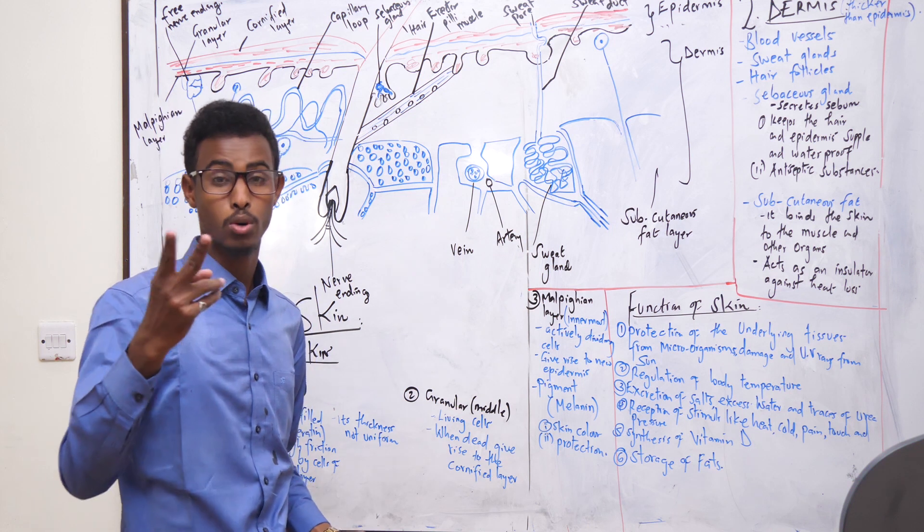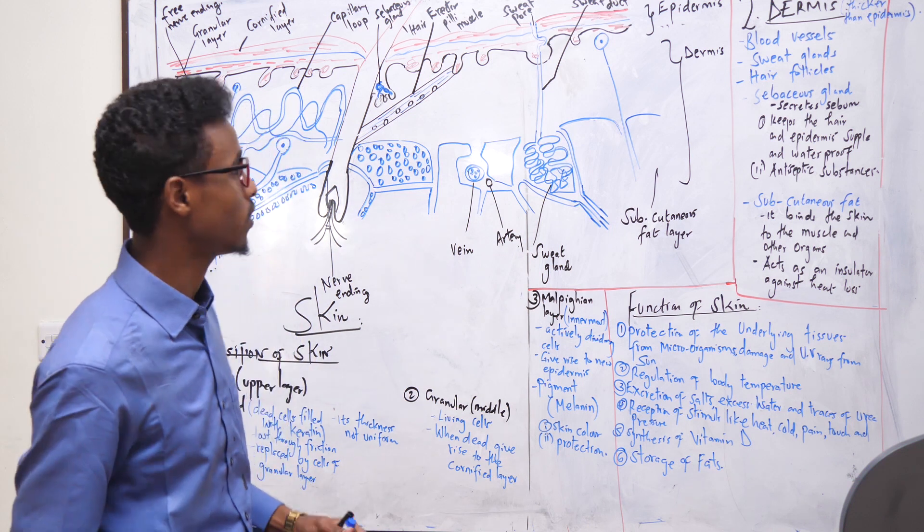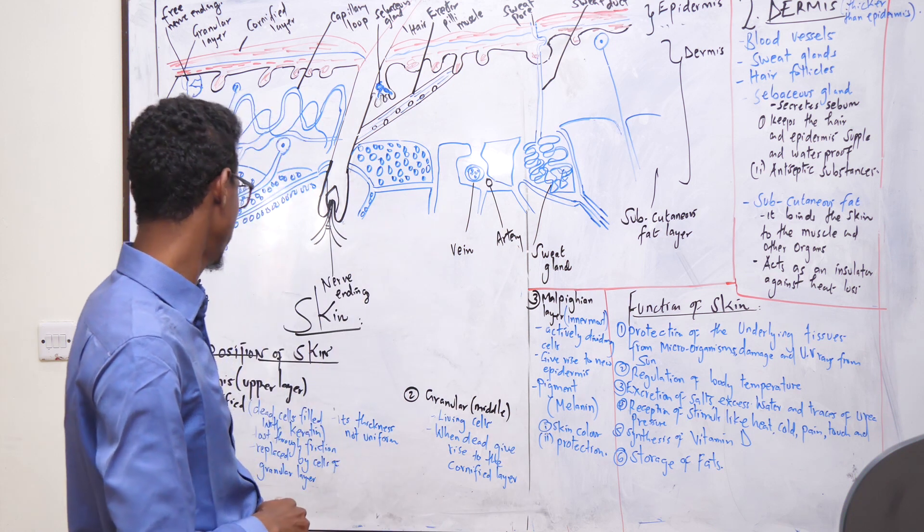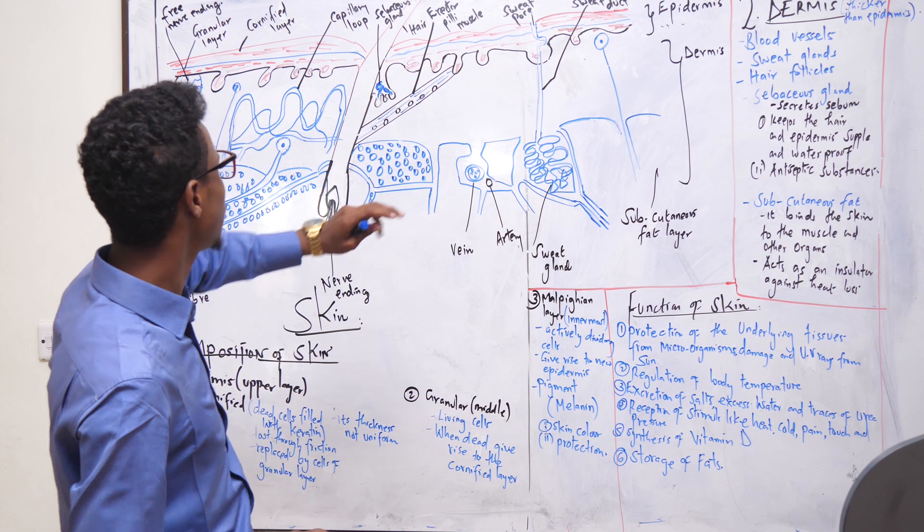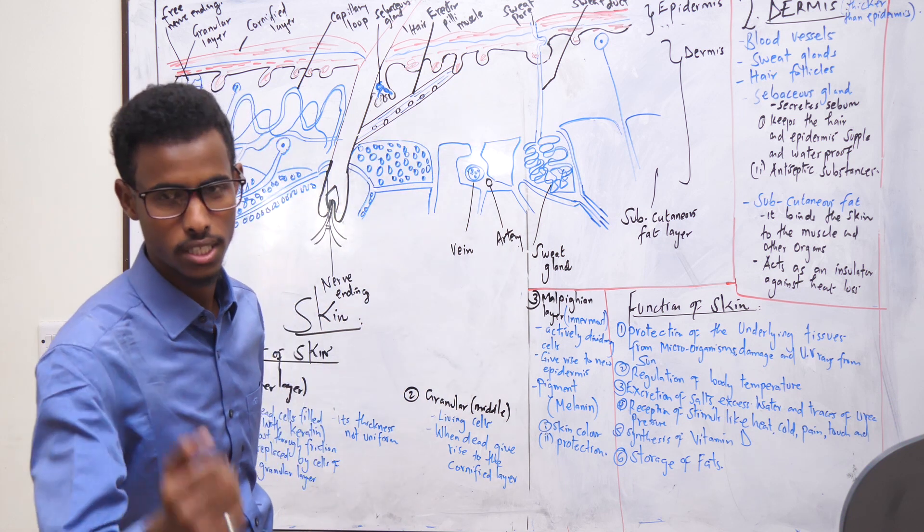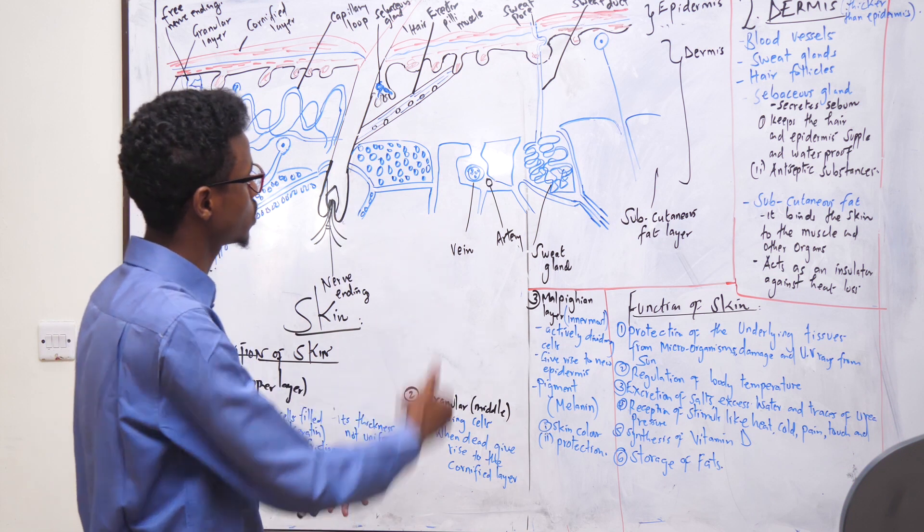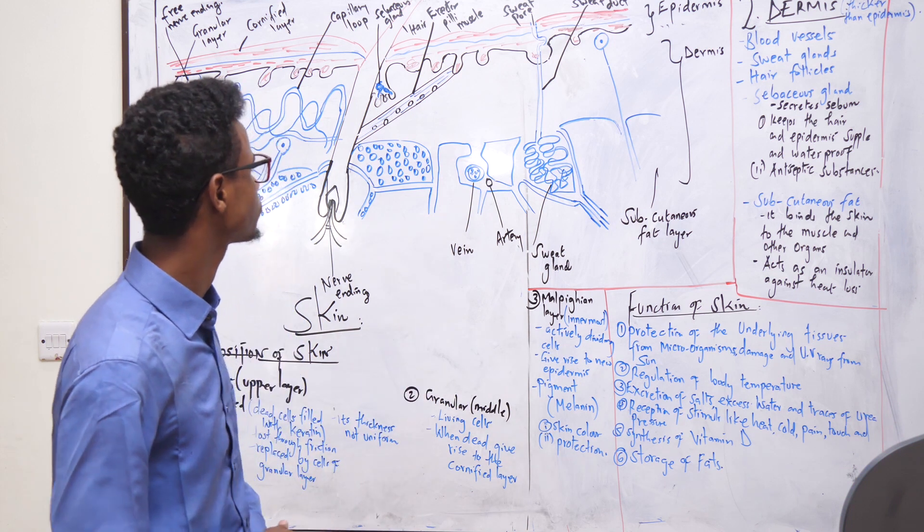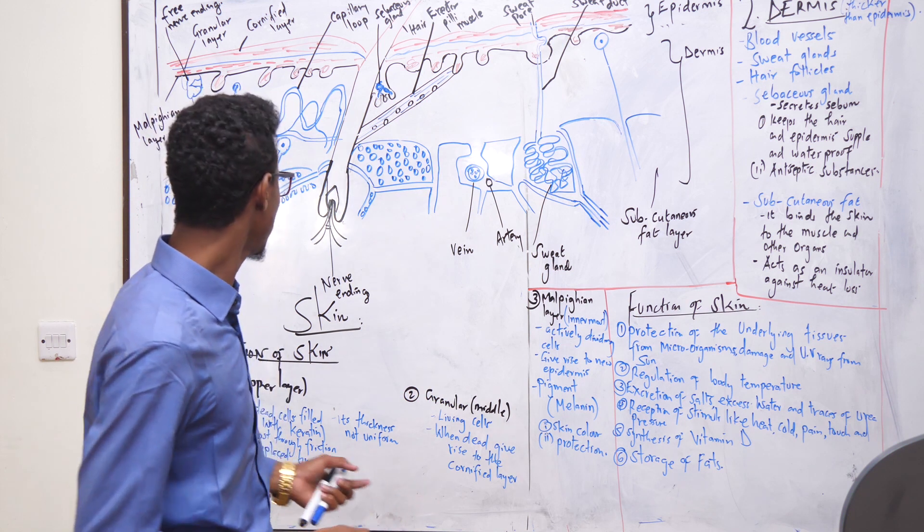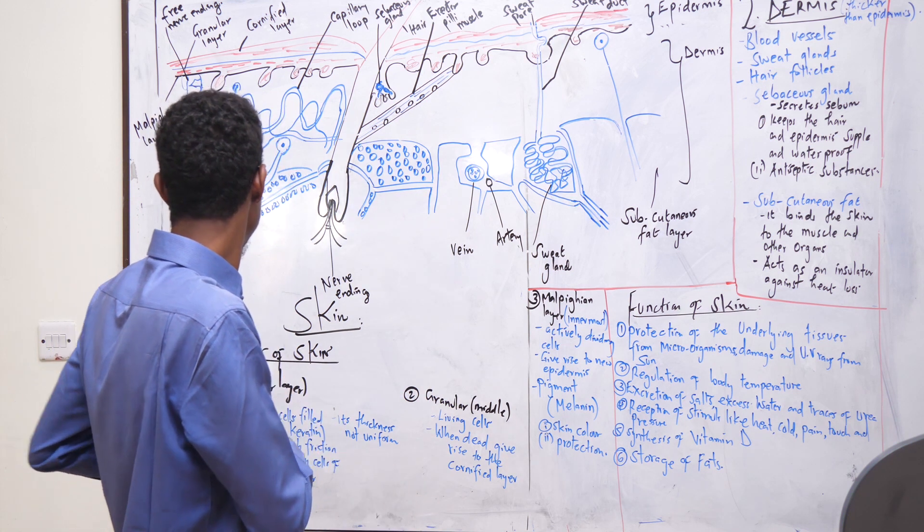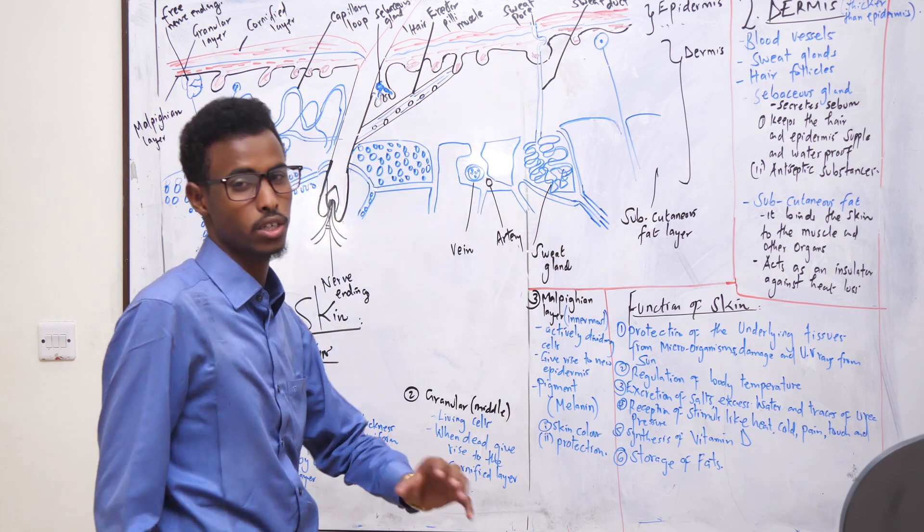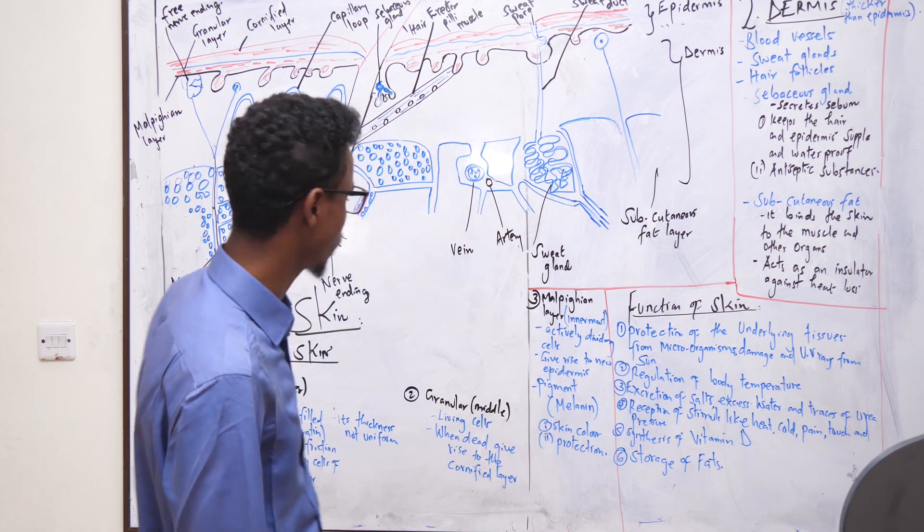The skin is basically composed of two layers: you have the upper layer of the skin and the lower layer. The upper layer of the skin is called the epidermis, and the lower layer of the skin is called the dermis. What are the compositions of the epidermis and dermis? Let's look at that quickly.